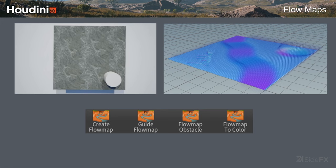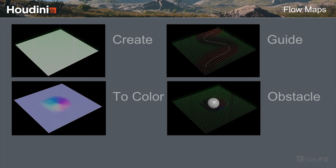We've written four different nodes to help you work with flow maps. One initializes the flow map so you can create velocity vectors and visualize them. Another lets you guide them with curves for more control — a common workflow. You can also drop down obstacles so if you have a pier or rocks the flow map bends around them. The really cool one is the two-color node which does the correct math for tangent binormals and normals so velocities in world space are converted to tangent space.